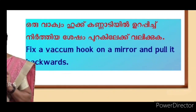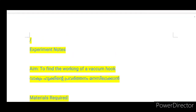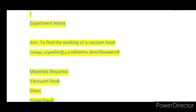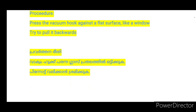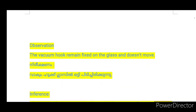Fix a vacuum hook on a mirror or flat surface and pull it backwards — that is the experiment. Aim: to find the working of a vacuum hook. Materials required: vacuum hook and glass. Press the vacuum hook against a flat surface like a window glass, then try to pull it backwards. The vacuum hook remains fixed on the glass and does not move.